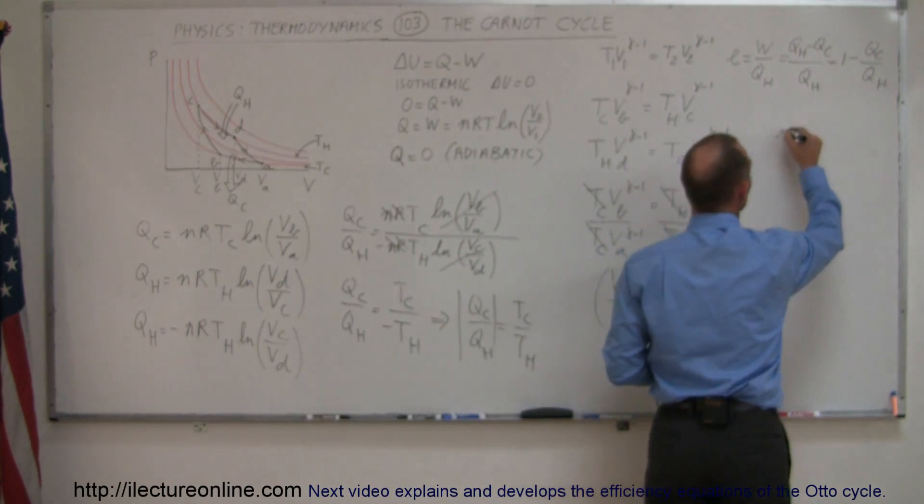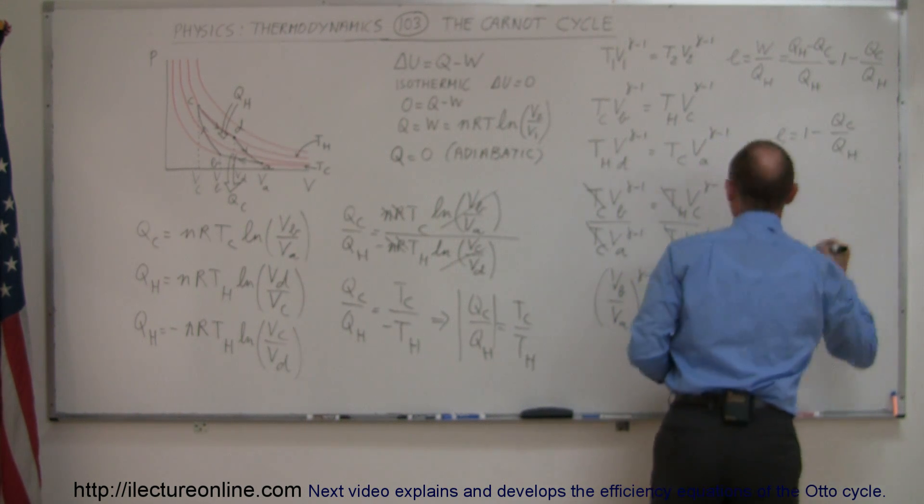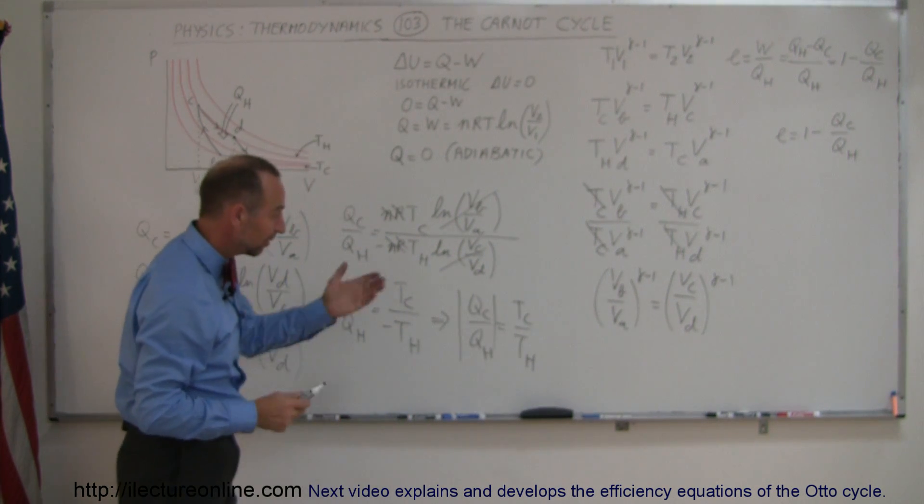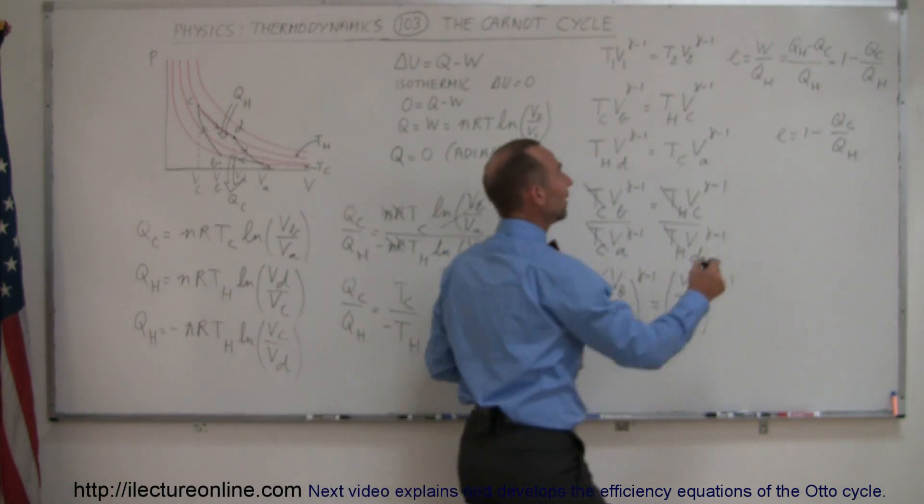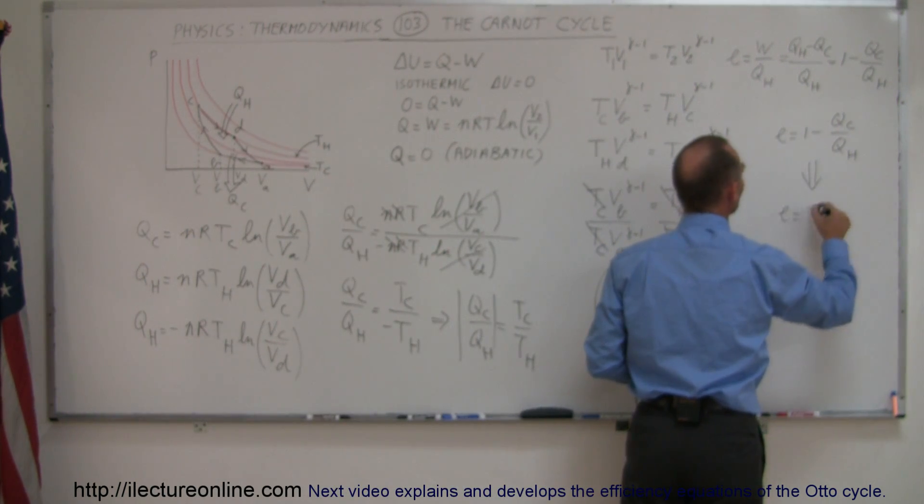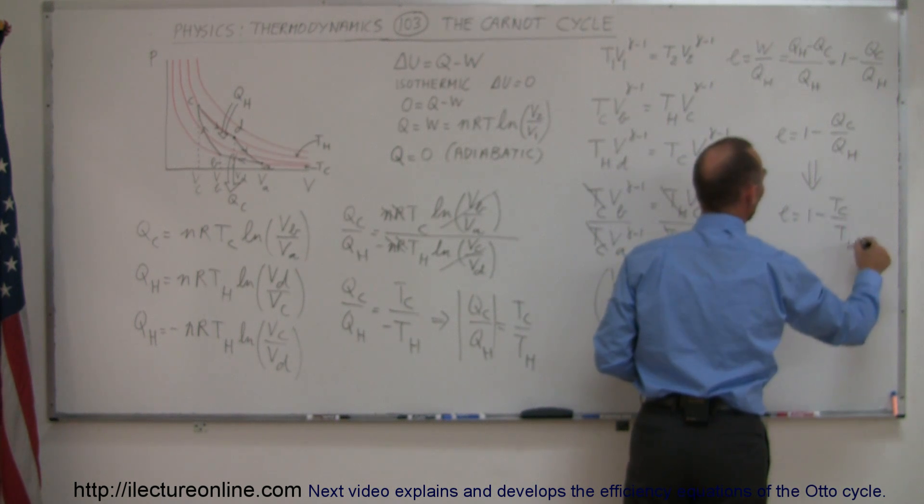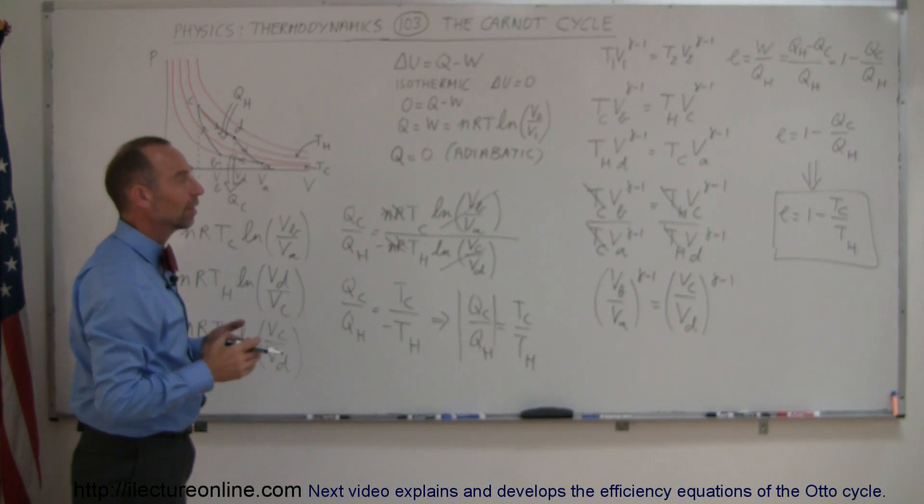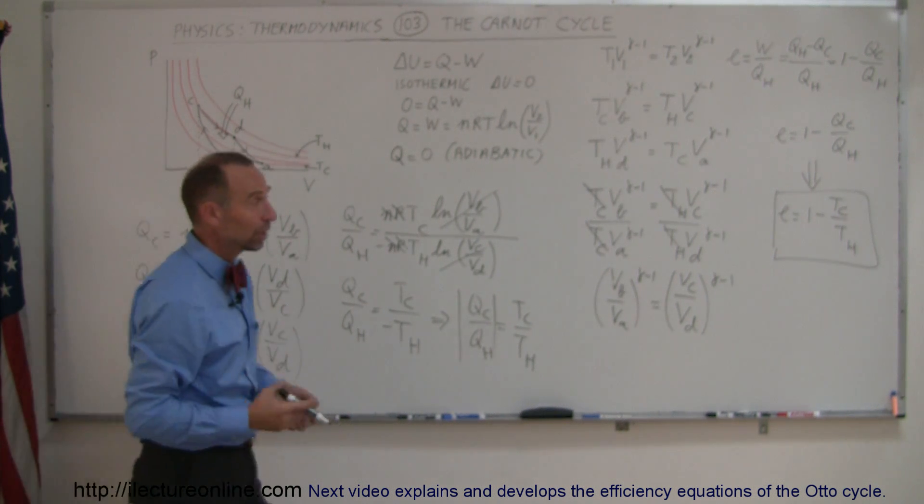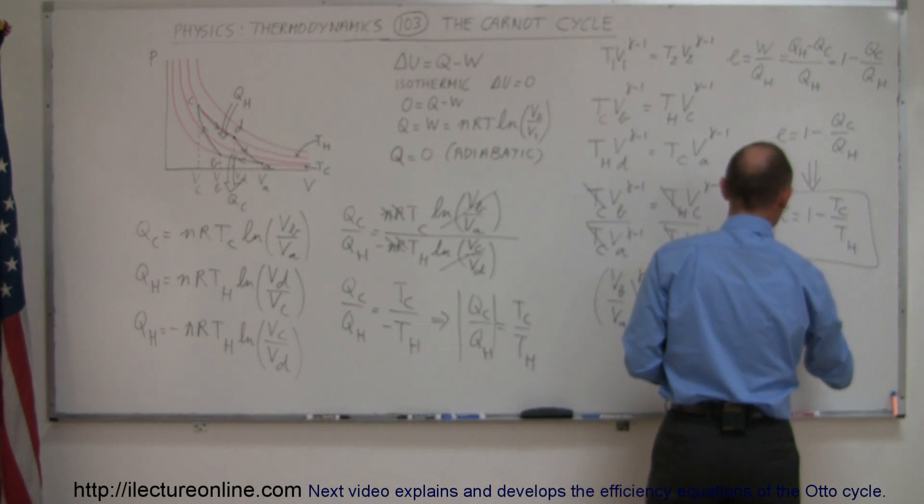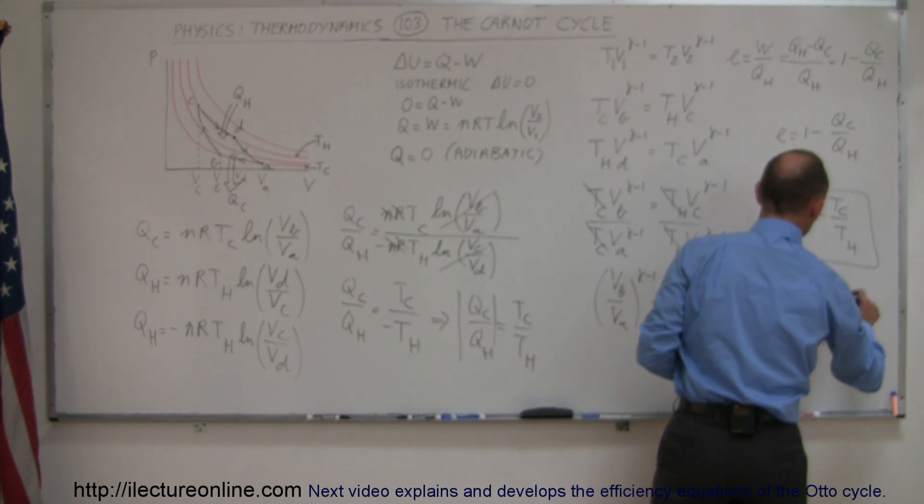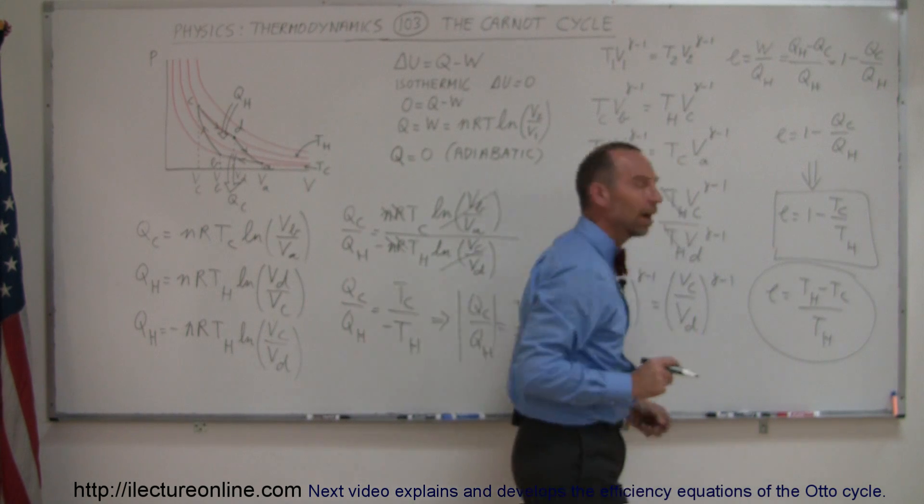And then I can see over here, if the efficiency is equal to 1 minus Q_c over Q_h, and I have determined that Q_c over Q_h is equal to T_c over T_h, then this equation then becomes the efficiency is equal to 1 minus T_c over T_h for a theoretical Carnot engine. And that then is the maximum efficiency any engine can have, simply 1 minus T_c over T_h. Now, of course, that can be written in a couple different ways, but also can be written as E is equal to T_hot minus T_cold divided by T_hot, and that's another way of writing the maximum efficiency of a Carnot engine.